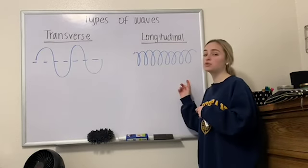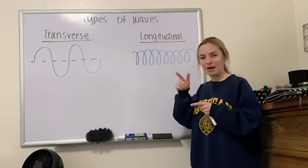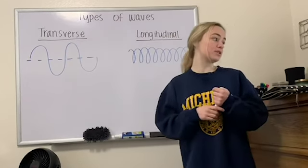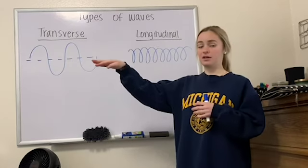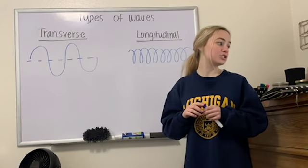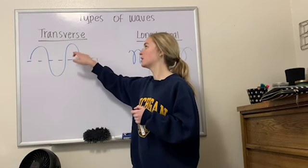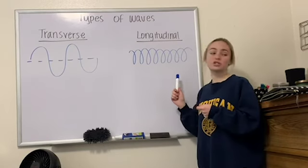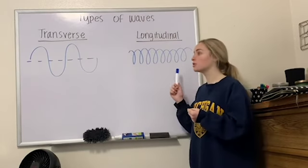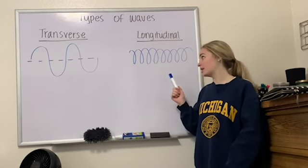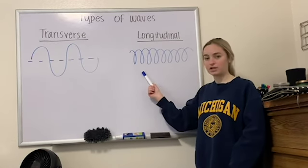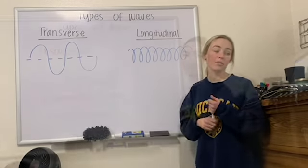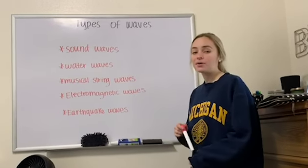The longitudinal wave looks more like a spiral-bound cord. A transverse wave propagates horizontally while its disturbance of the cord is in the vertical direction — the disturbance is perpendicular to the propagation. A longitudinal wave also propagates horizontally, but the disturbance is in the horizontal direction as well, so the disturbance is parallel to the direction of the wave.